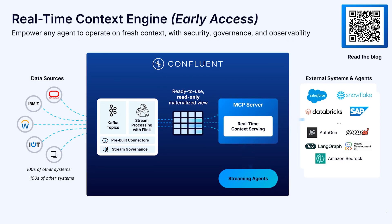What if you want to serve context in real time to any of your other AI apps or agents? That's where Real-Time Context Engine comes in. Real-Time Context Engine transforms raw streaming data into structured, low-latency context that any AI app or agent can consume instantly, wherever it is. It continuously evaluates, refines, and serves trustworthy context so every decision reflects the latest truth, grounded in your data's full history.